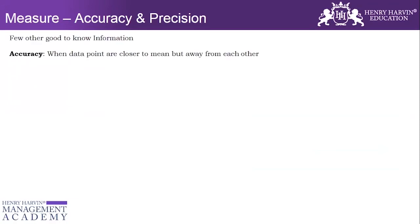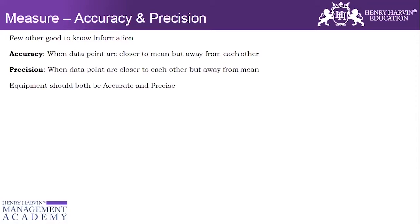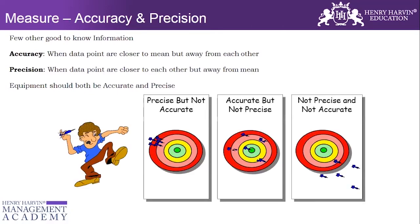Now let's talk about accuracy and precision. Accuracy is when the data points are closer to the mean but far from each other. Precision is when the data points are closer to each other but away from the mean. In this example, the equipment is precise because the data points are closer to each other, but they stay away from the mean — so that's precise but not accurate. This next case is accurate but not precise: data points are closer to the mean but not closer to each other.